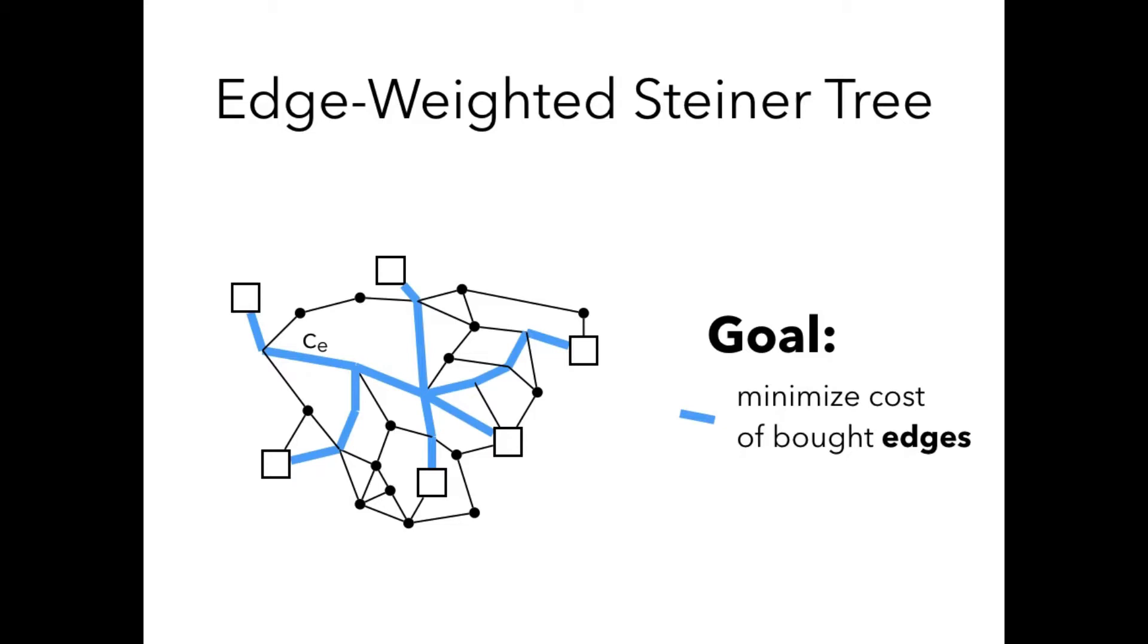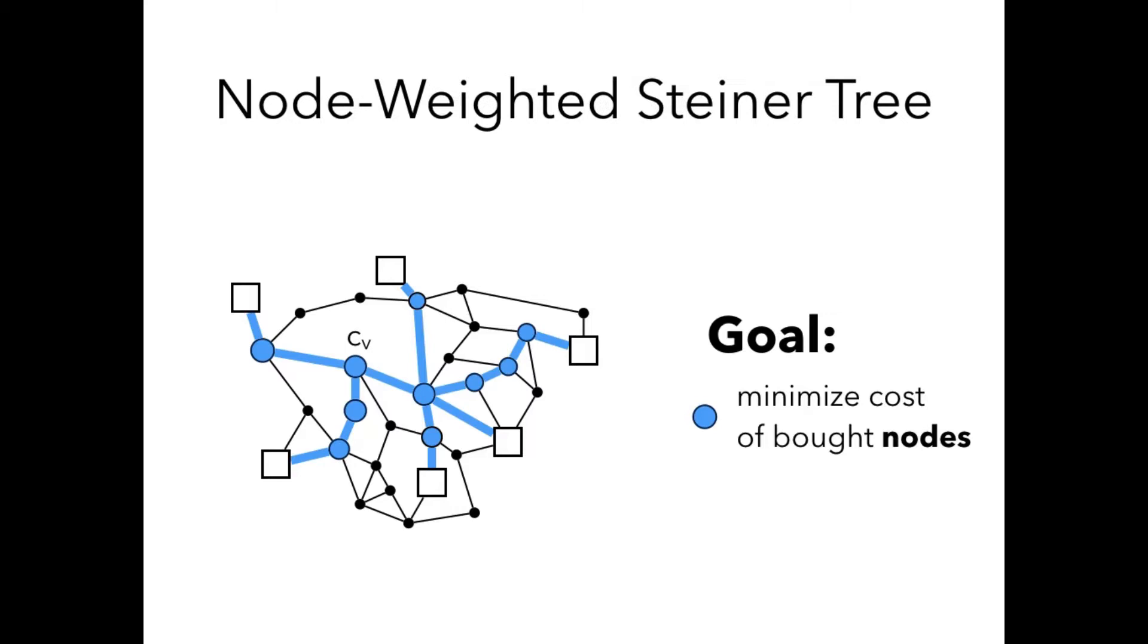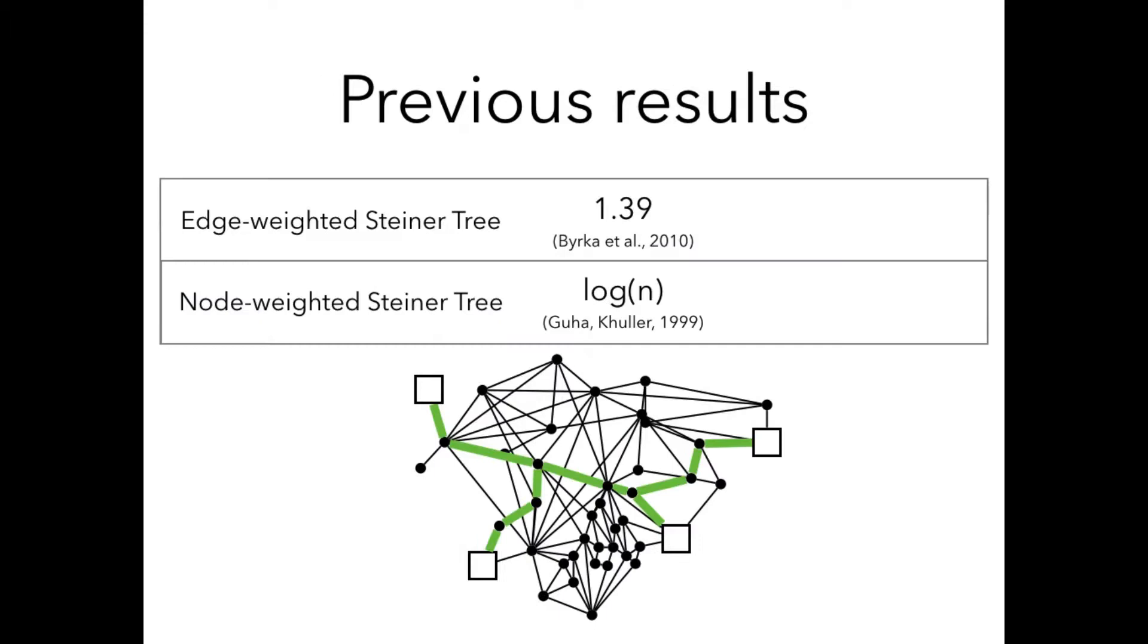The Steiner tree problem comes with many variants. The most classical one is the edge-weighted Steiner tree in which every edge has some cost, and you want to find a tree of minimum total edge-weight. Another variant is the node-weighted Steiner tree in which instead of cost on edges we are given cost-weight on nodes. The goal is to connect our terminals with a tree of minimum node weights.